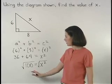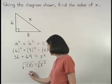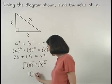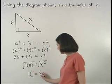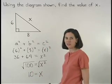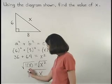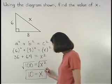On the left, the square root of 100 is 10, and on the right, the square root of x squared is x. So our answer is 10 equals x.